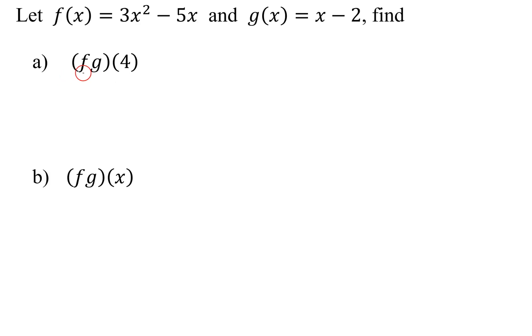Part a says we need to find f times g evaluated at 4, or the product function evaluated at 4. So by definition, this is going to equal f evaluated at 4, or f(4), multiplied by g evaluated at 4. So all I have to do is figure out both of those.